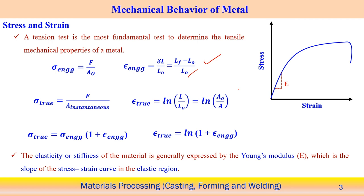Similarly, we can represent the true stress and true strain during the deformation. True stress means the applied load divided by the instantaneous value of the cross section area. When you try to uniformly deform one component, the cross section area hardly remains constant — it actually gradually varies during the state of deformation. So if we take the instantaneous value, the ratio defines the true stress. True strain value can be represented as logarithm of L by L0, or we can say the logarithm of A0 by A, where A is the instantaneous cross section area and A0 is the initial cross section area.